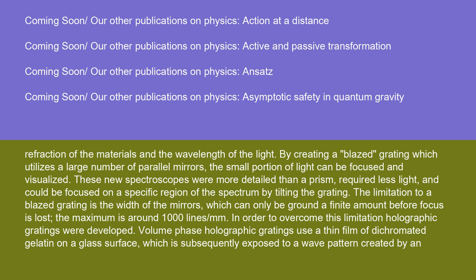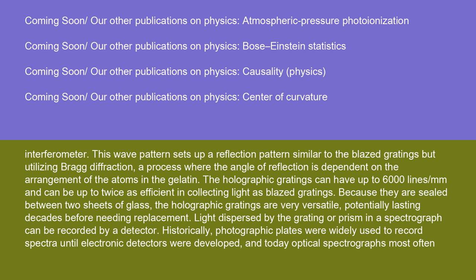The limitation of a blaze grating is the width of the mirrors, which can only be ground a finite amount before focus is lost — the maximum is around 1000 lines/mm. To overcome this limitation, holographic gratings were developed. Volume phase holographic gratings use a thin film of dichromate gelatin on a glass surface, which is subsequently exposed to a wave pattern created by an interferometer. This wave pattern sets up a reflection pattern similar to the blaze gratings, but utilizing Bragg diffraction — a process where the angle of reflection is dependent on the arrangement of the atoms in the gelatin. The holographic gratings can have up to 6000 lines/mm and can be up to twice as efficient in collecting light as blaze gratings. Because they are sealed between two sheets of glass, the holographic gratings are very versatile, potentially lasting decades before needing replacement.